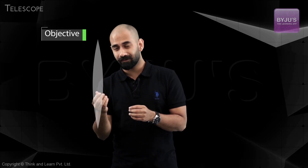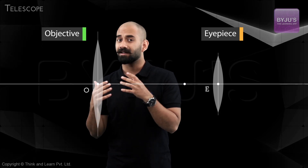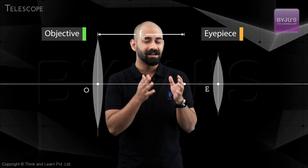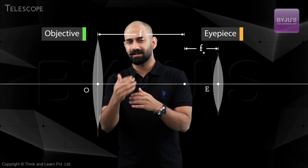When you use them, you suddenly feel like I have come much closer to you. How exactly does this work? Telescopes are also made of two lenses — two bi-convex lenses — one called the objective and one called the eyepiece. The only difference here is that the objective has a larger focal length and the eyepiece has a smaller focal length. We'll come to why in some time.